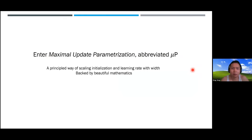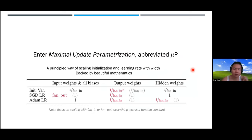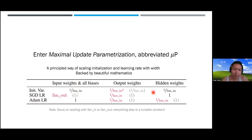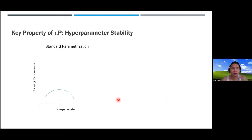Here's a small table that encapsulates what MuP is about. The takeaway is that it's just a small table telling you how to set initialization and learning rate for SGD and Adam for different weight types—input weights, output weights, and hidden weights. The entries tell you how to do the scaling. This simple form of scaling rules gives you the right way to set parameters correctly for large models.